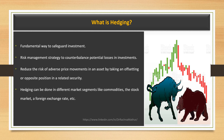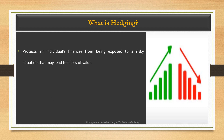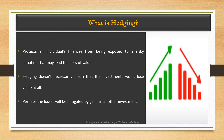Hedging can be done in different market segments — in gold, silver, copper and other commodities, in various stocks and indices in the stock market, and also in the foreign exchange market. Therefore, hedging is somewhat analogous to taking out an insurance policy. It is an investment that protects an individual's finances from being exposed to a risky situation that may lead to a loss of value. We should not forget, however, that hedging does not necessarily mean the investment won't lose value at all — the loss will be mitigated by gains in another investment. A common form of hedging is a derivative, whose value is measured by the value of the underlying asset.